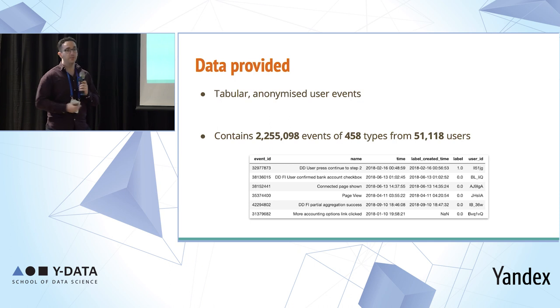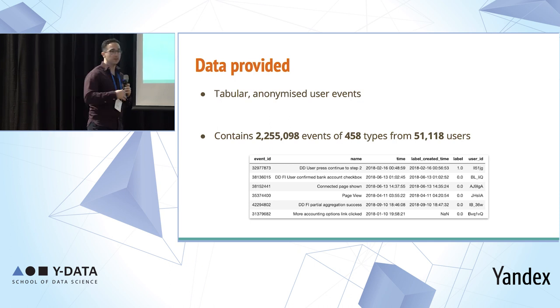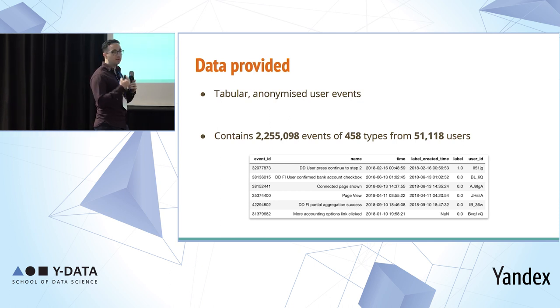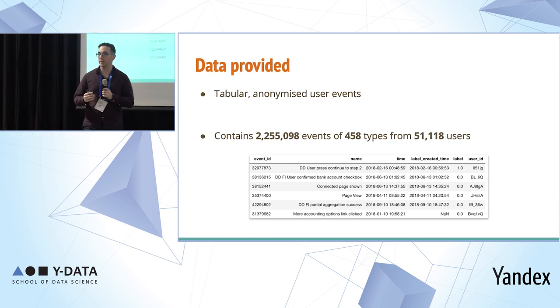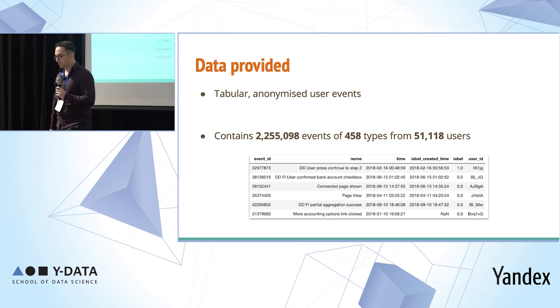The data we were provided from Funbox was tabular. We had over 2 million rows of events created during the onboarding process, 458 different event types, and more than 51,000 users. Basically what we have is event names, the time they were created, the user ID, and a label — whether the user finished or didn't finish the onboarding funnel. One signifies the user saw the dashboard; zero means they got stuck somewhere along the way.